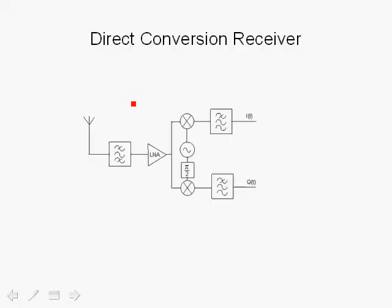Here we show the architecture of a direct conversion receiver. In a direct conversion receiver, we have the oscillator, which has an in-phase and quadrature phase term. The oscillator itself can be generated using a synthesizer driven by a crystal, at 40 MHz, and then the synthesizer creates a carrier at 5.2 GHz.